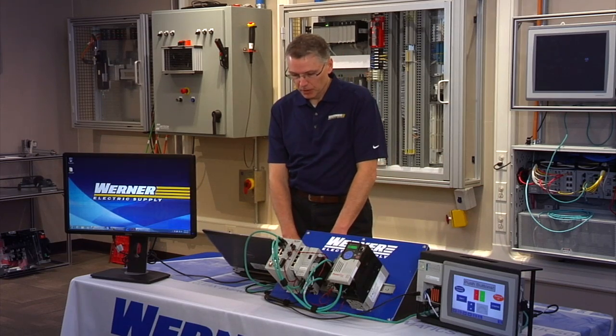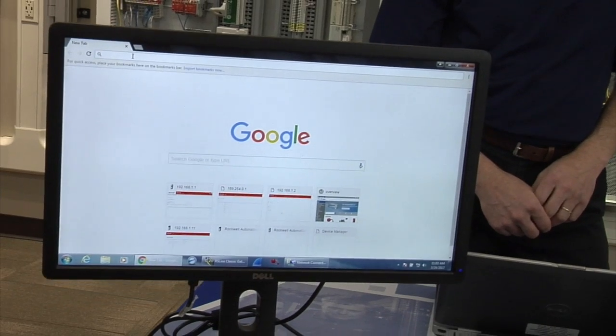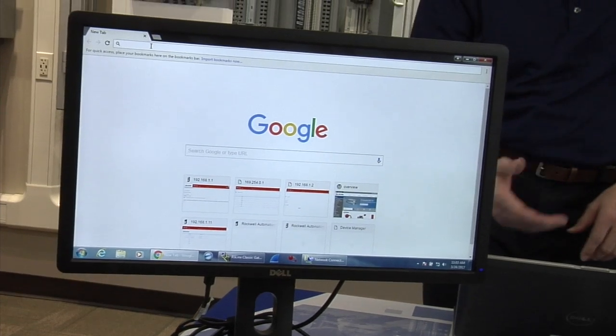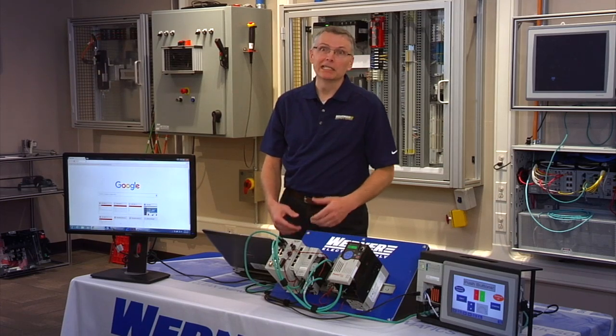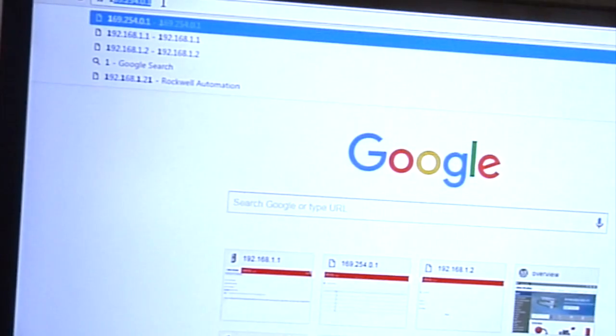For web configuration I'm just going to use Google Chrome here. Once the switch is in the express setup mode it'll respond to a web browser at the IP address 169.254.0.1, so I'm going to put that into the web browser.